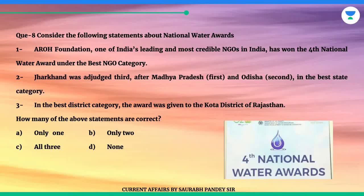Question 8. Consider the following statements about the National Water Awards. Statement 1: RO Foundation, one of India's leading and most credible NGOs, has won the fourth National Water Award under the Best NGO category. Statement 2: Jharkhand was adjudged 3rd after Madhya Pradesh (1st) and Odisha (2nd) in the Best State category. Statement 3: In the Best District category, the award was given to the Kota district of Rajasthan.